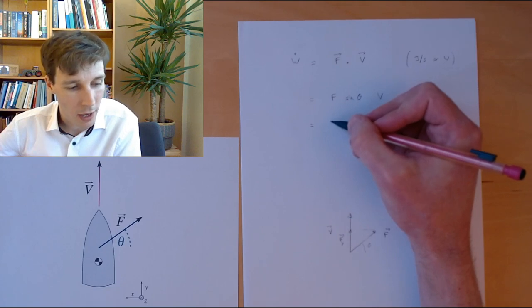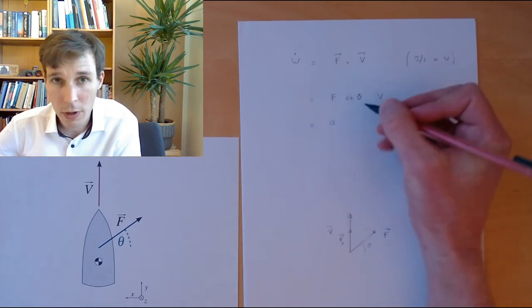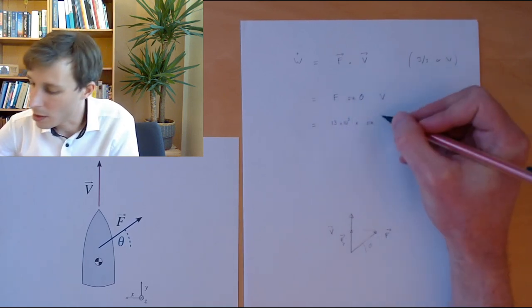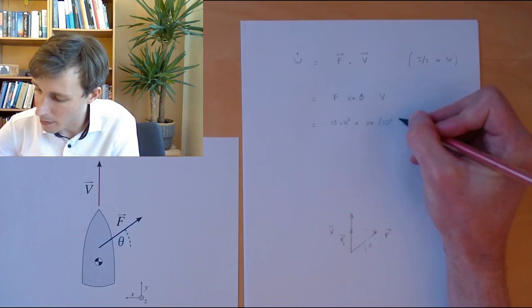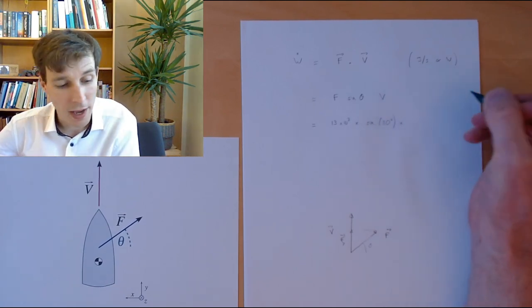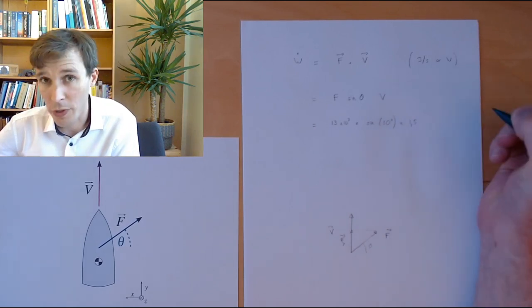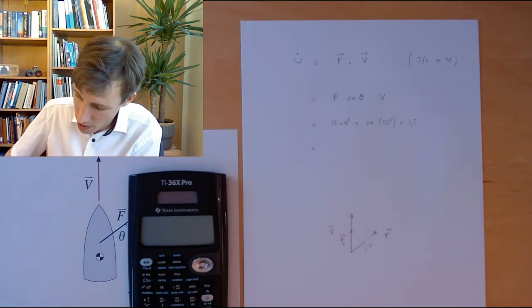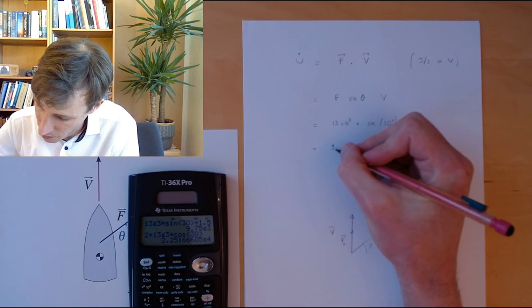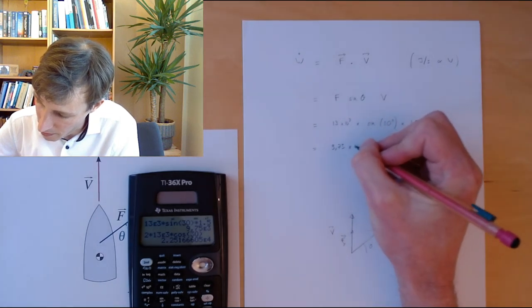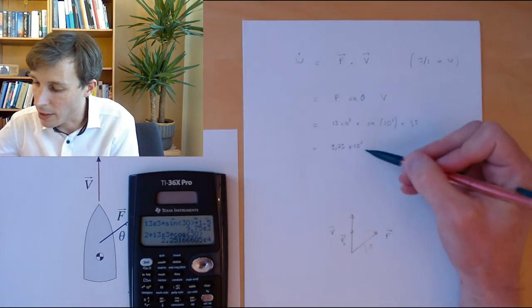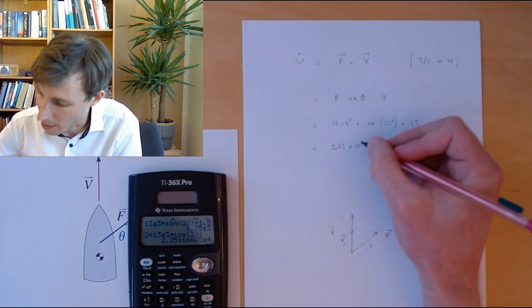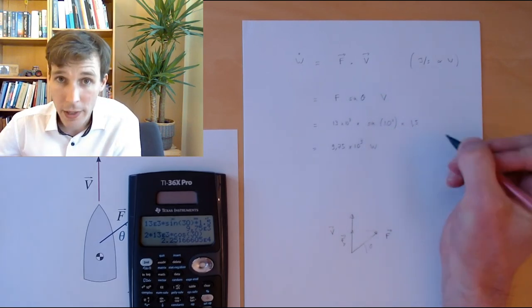We have F equal to 13 kilonewtons, so 13 times 10 to the power 3, times sine of the angle which is 30 degrees, multiplied by the length of V, and V happens to be 1.5 meters per second. If you type the sine into your calculator, you get 9.75 times 10 to the power 3. And now comes the time to write the unit, power as work, so that's joules per second, or better said watts.